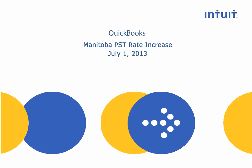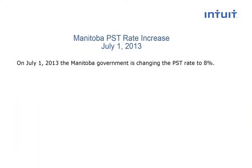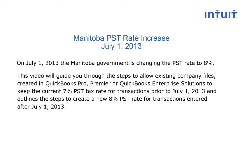Manitoba PST rate increase effective July 1st, 2013 — adding a new tax rate for Manitoba PST. On July 1st, 2013, the Manitoba government is changing the PST rate to 8%. This video will guide you through the steps to allow existing company files created in QuickBooks Pro, Premier, or QuickBooks Enterprise Solutions to keep the current 7% PST tax rate for transactions prior to July 1st, 2013, and outlines the steps to create a new 8% PST rate for transactions entered after July 1st, 2013.